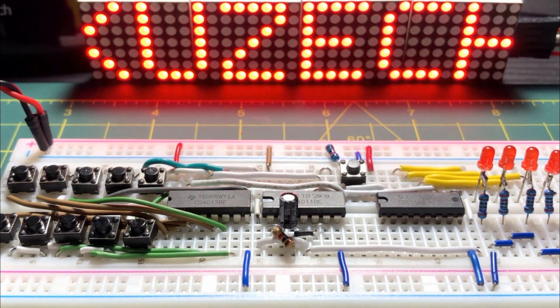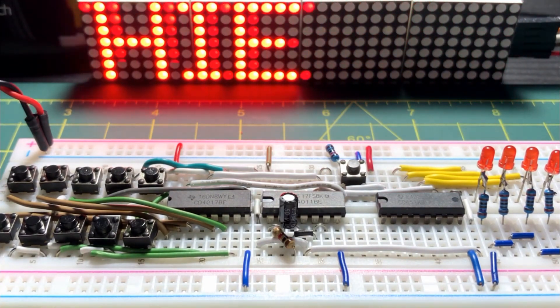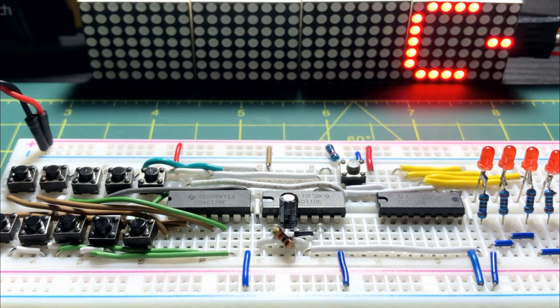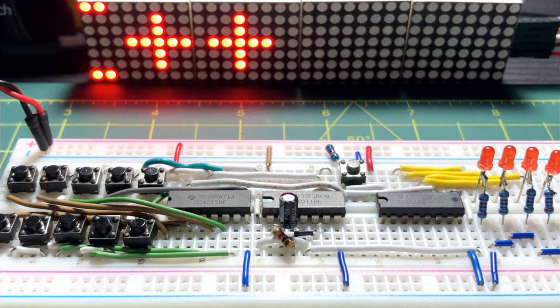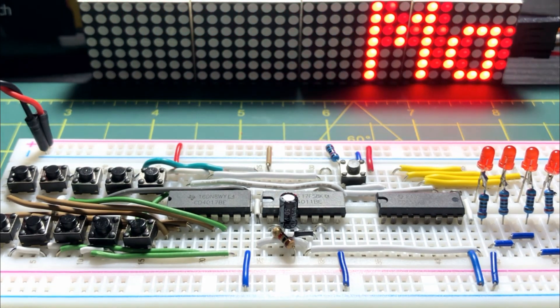The keyboard encoder circuit can be modified by displaying the Binary Coded Decimal value on a 7-segment display. Thank you for watching.